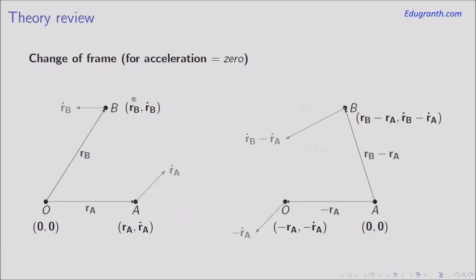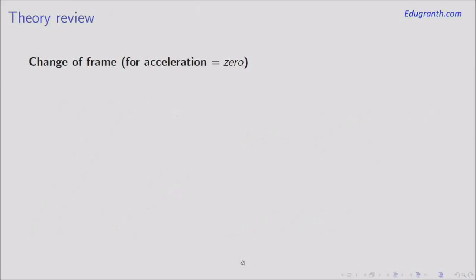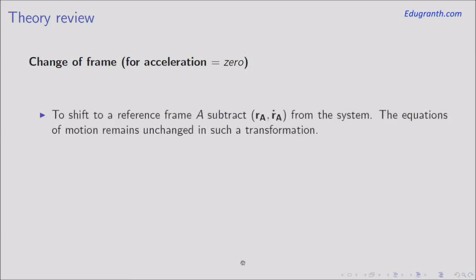You subtract Ṙ_A here and get zero for A, subtract it for O to get minus R_A and minus Ṙ_A, and subtract for B to get R_B minus R_A and Ṙ_B minus Ṙ_A. So we have shifted to the reference frame of A, after which we can apply the usual equations of motion. The technique is: to move to reference frame A, subtract position and velocity vectors everywhere in the system, then analyze motion with the usual equations.